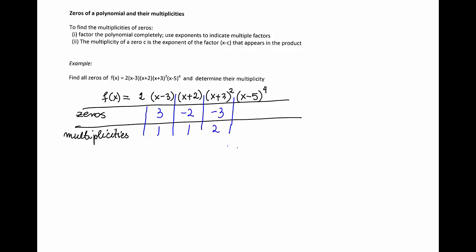The last factor produces zero 5 because it's the factor x minus 5, and since the factor appears 4 times in multiplication, the multiplicity of that zero is 4.